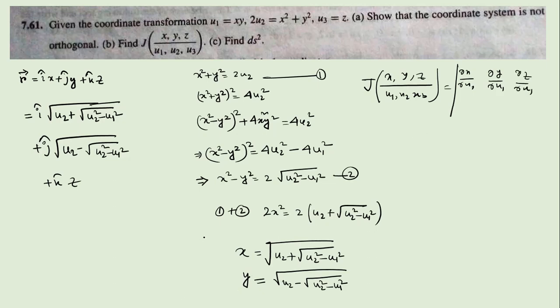Just compute the partial derivatives and fill in the Jacobian matrix: ∂x/∂u2, ∂x/∂u3, and so on. Putting in the values, the answer for the Jacobian works out to (1 - y² - x²). This is a long process — just work through it and you will get this answer.